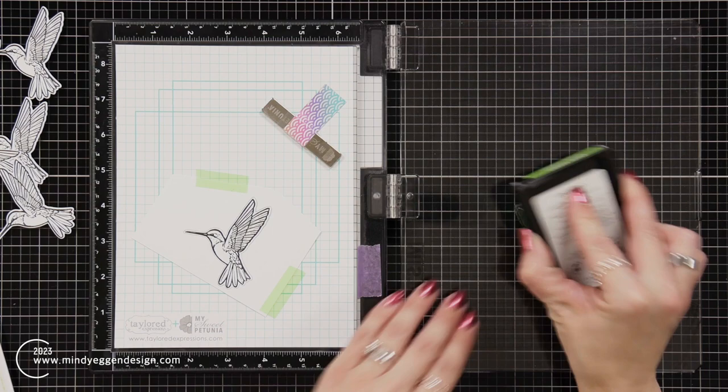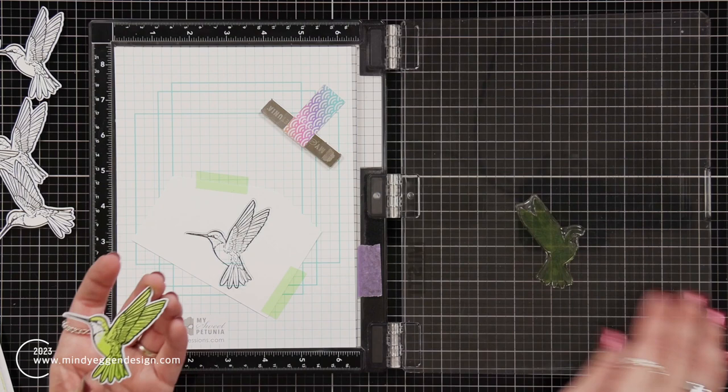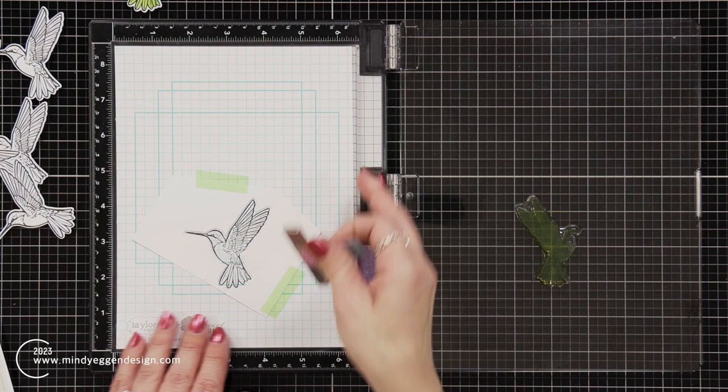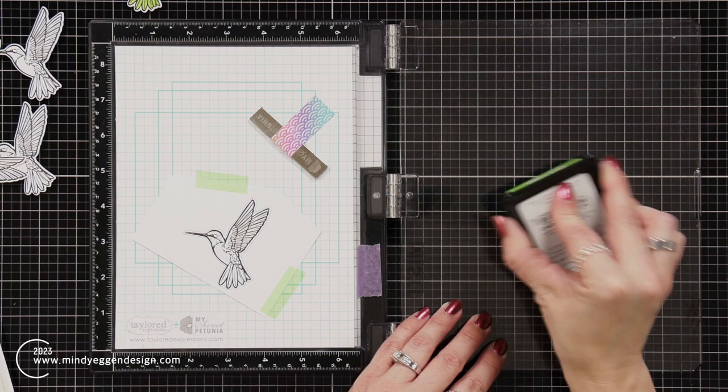Now I can ink up this first layer of the hummingbird with green apple ink. You know it's the first layer when it's the most solid image out of the layering set. Also in most cases, it will show you on the back of the packaging what each image looks like and how to layer it up. So now I have that one down. I'm going to do it one more time on camera, placing in my outline image and inking up this first layer with green apple ink.